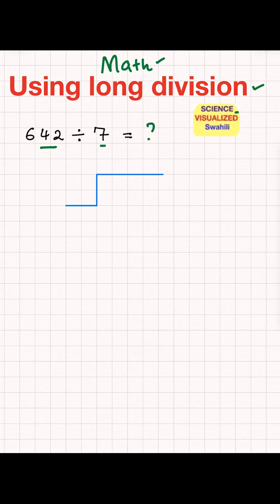So in this case, the 642 is called the dividend. While the number that you're dividing it with, 7, is the divisor. And the answer to the problem is called the quotient.